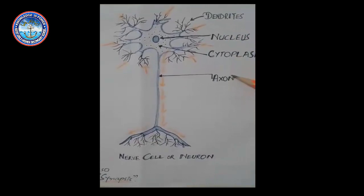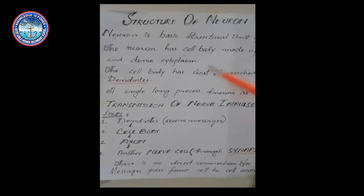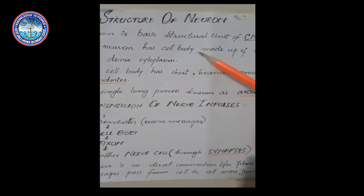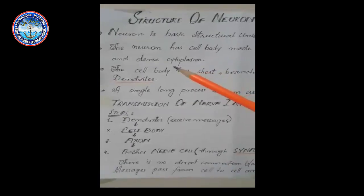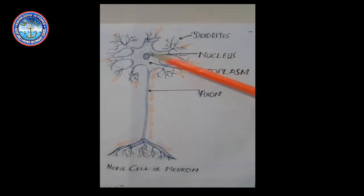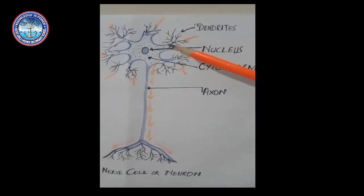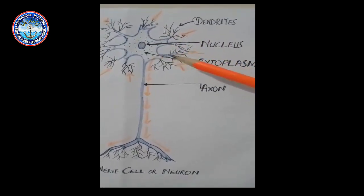Let's discuss them one by one. First, the neuron has a cell body made up of large nucleus and cytoplasm. As the picture shows, it contains a cell body that contains dense cytoplasm and the central large nucleus.